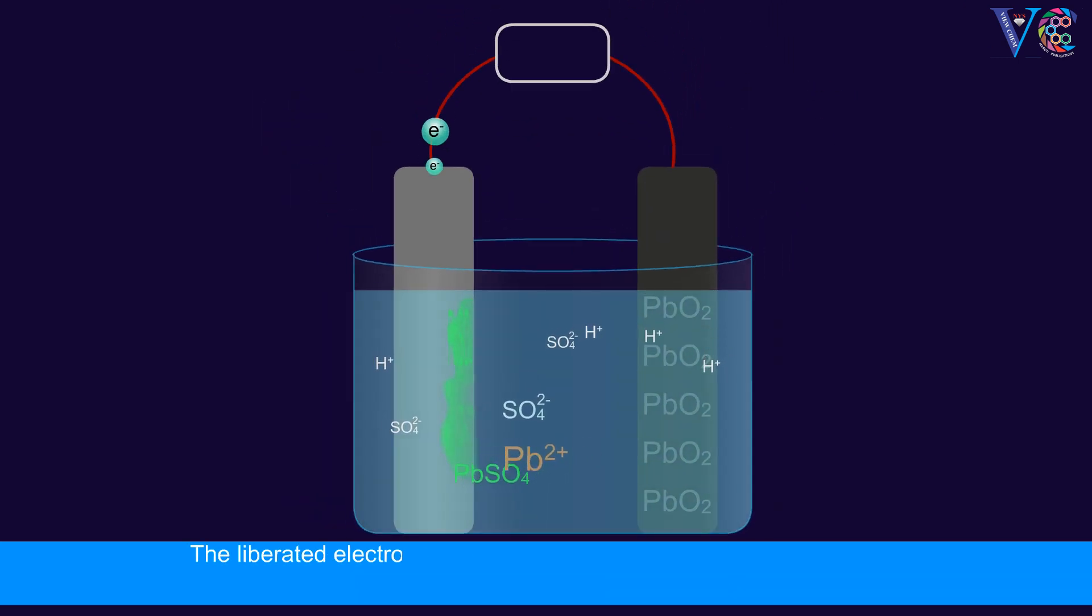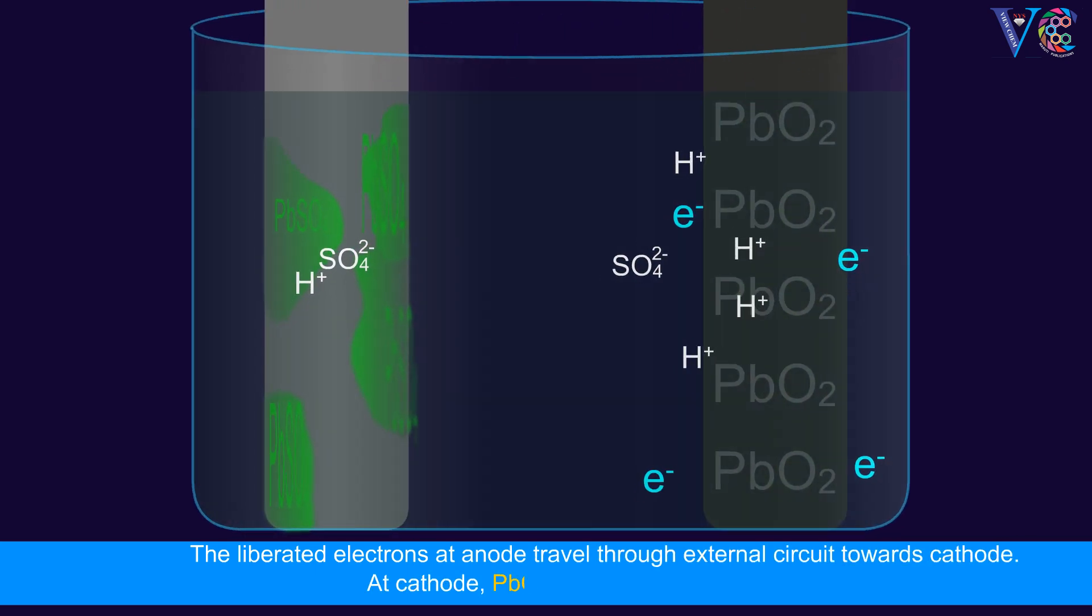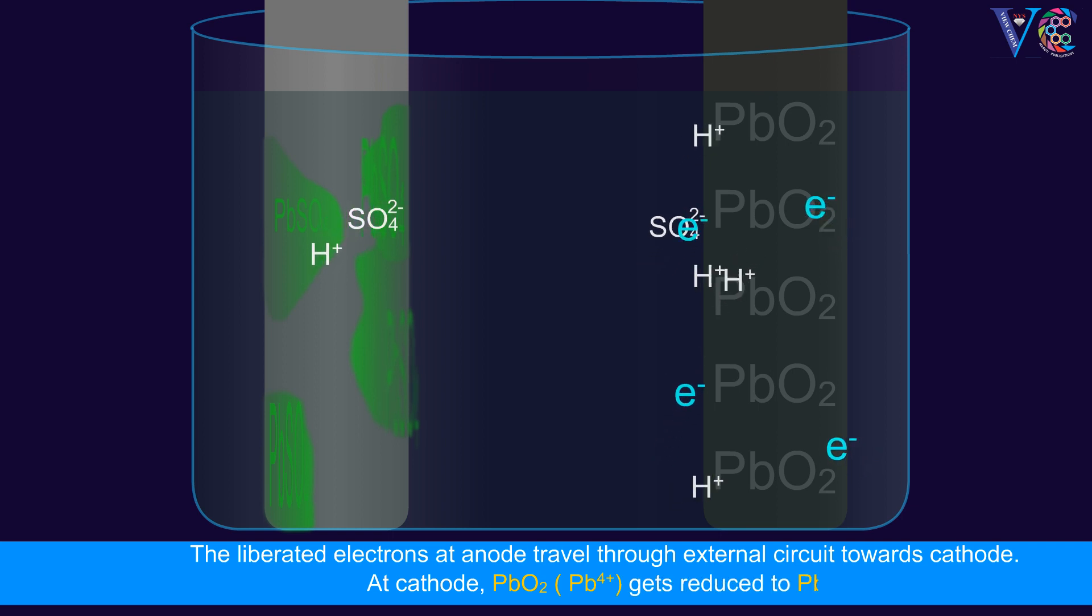The liberated electrons at anode travel through external circuit towards cathode. At cathode, Pb4+ gets reduced to Pb2+.